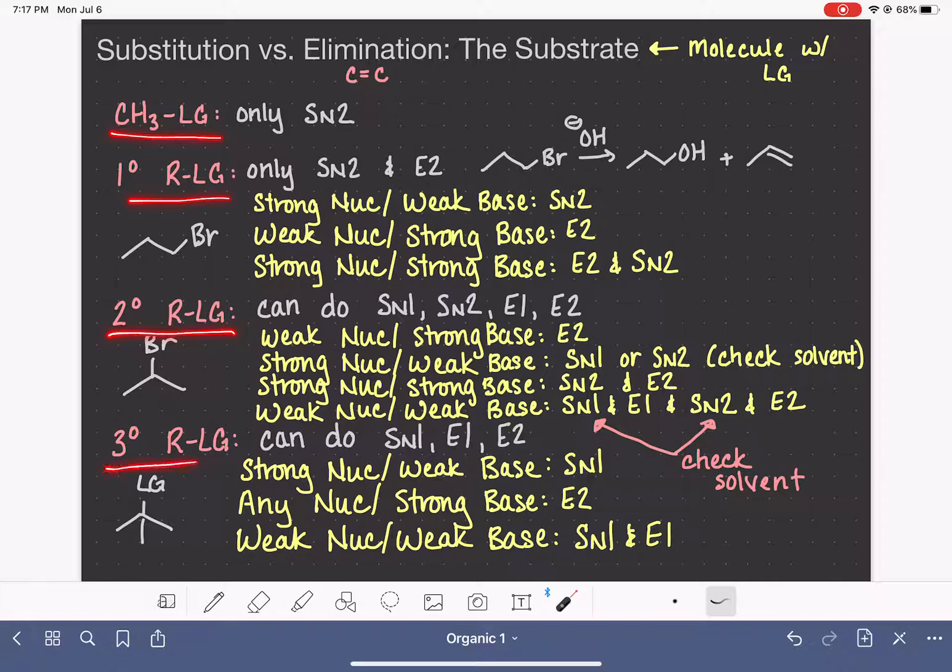Different types of substrates are only capable of doing different types of mechanisms. With the exception of the secondary alkyl halides, the substrates are only capable of doing one or two or three of the different mechanisms.